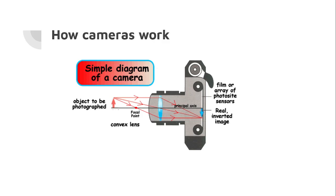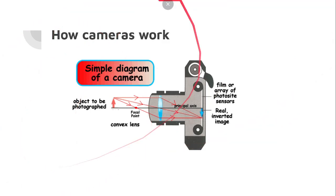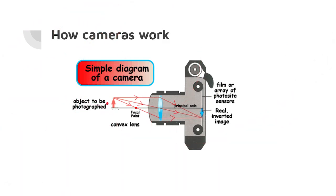Here's a simple diagram of a camera. This diagram is pulled from the first link on my sources tab. Here we have the object being photographed, we have the bi-convex lens, we have the film, and then the rest of the camera.